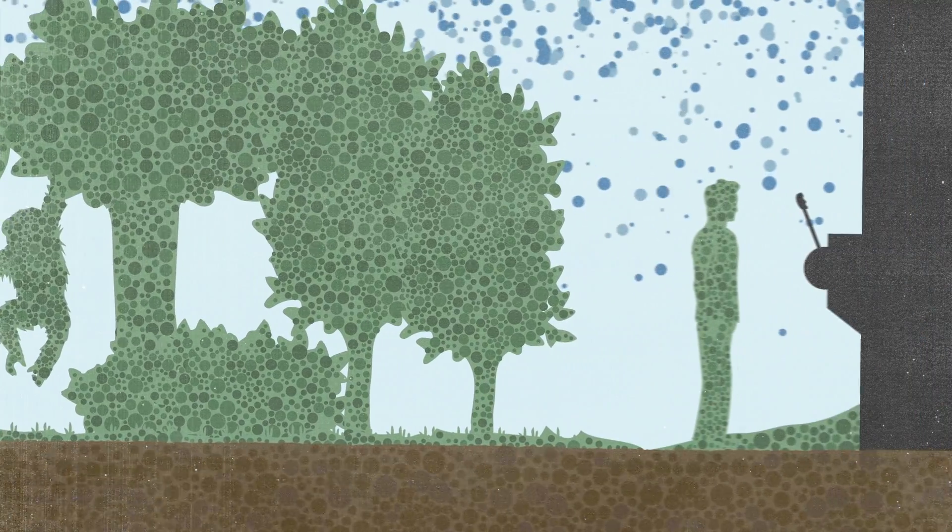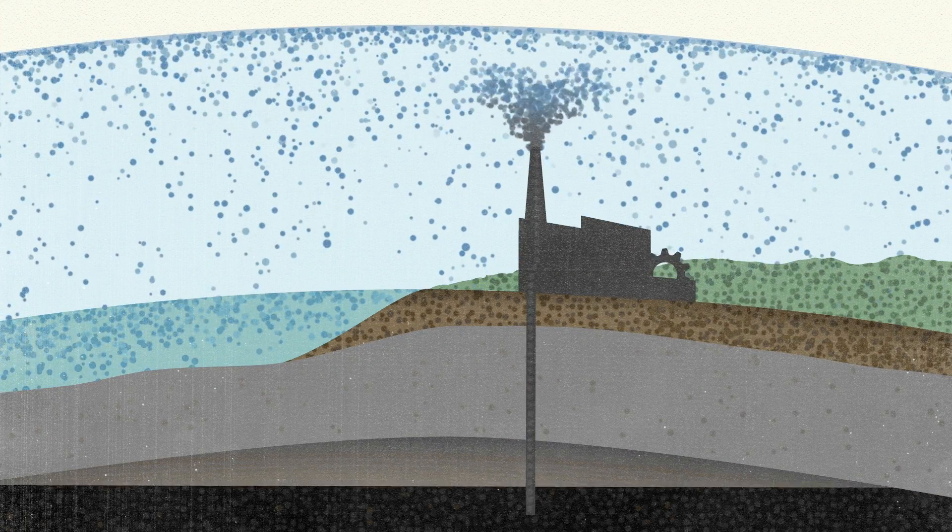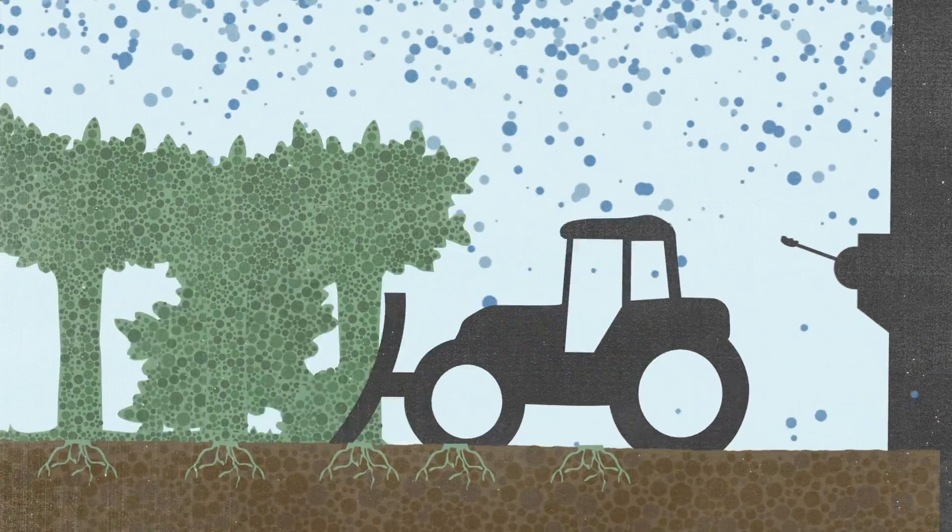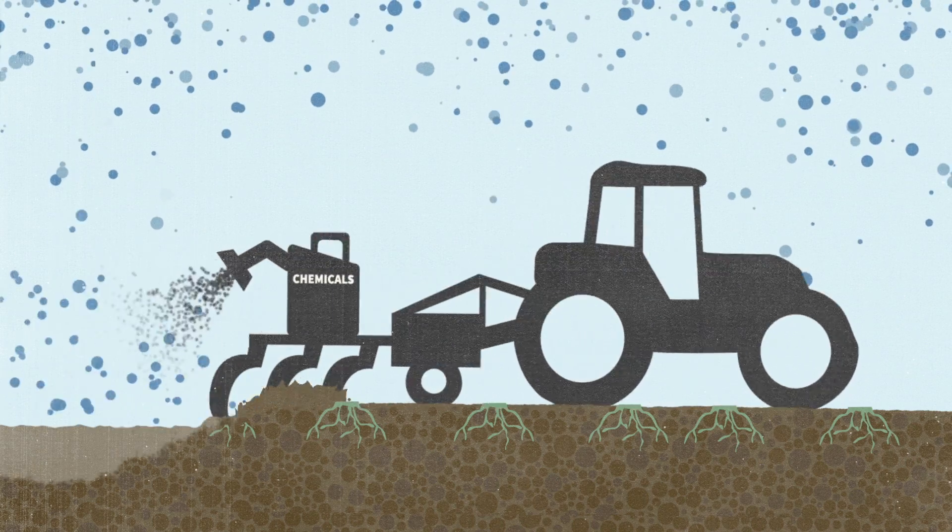Then one life form, that would be us, figured out how to extract carbon from the fossil pool, which was pretty much a time-out zone for carbon. We've been burning it for energy, putting it into play and disrupting that balance. The way we manage land and do agriculture is moving even more carbon into the atmosphere.